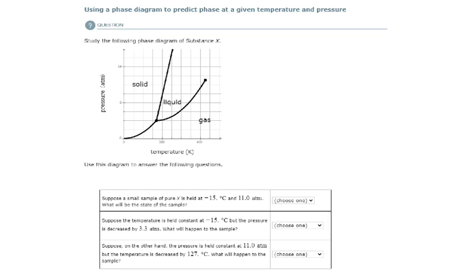So interpreting these phase diagrams is very simple. Let's jump right into it. It says, suppose a small sample of pure X is held at negative 15 degrees Celsius and 11 atm.